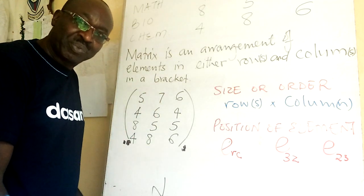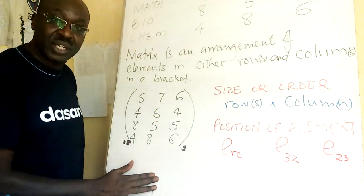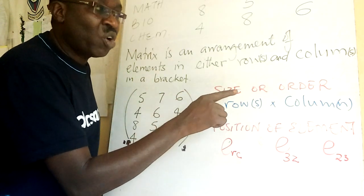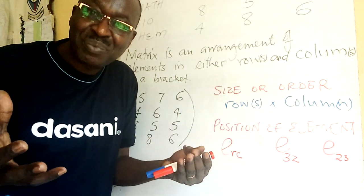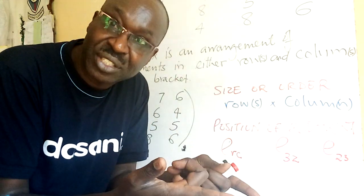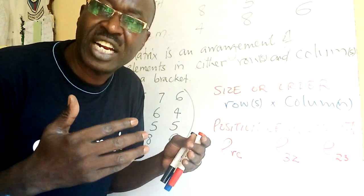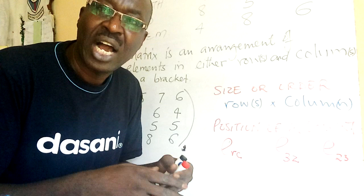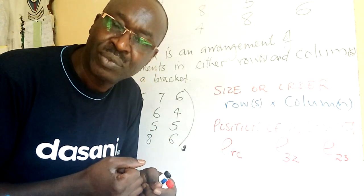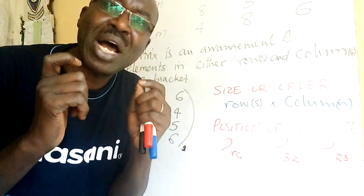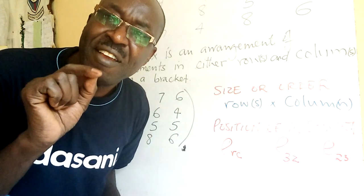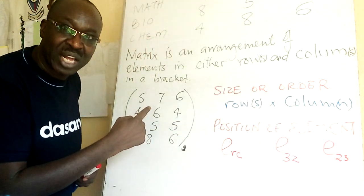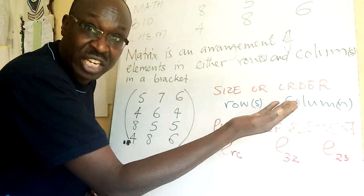The matrix is well arranged. The next concept is size or order. The size of a matrix is basically known as the order of a matrix. In our families we have different sizes — different numbers of children. Similarly, in matrices the size is defined by the number of rows against the number of columns. You cannot swap this — you cannot say column and then rows.